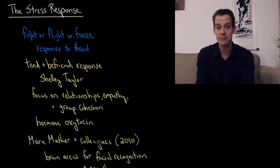But it's also been proposed that there might be gender differences in reaction to threats, and Shelley Taylor has suggested that females are less likely to show aggressive behavior in response to threats and they're more likely to exhibit what she calls a tend and befriend response. And this refers to a greater focus on relationships, empathy, and group cohesion in response to threats.